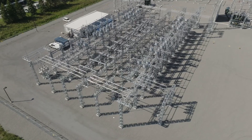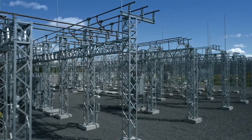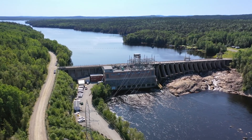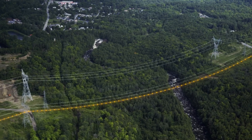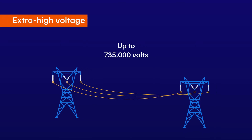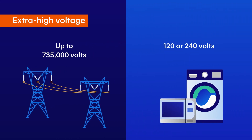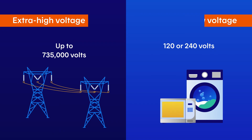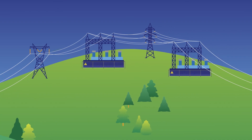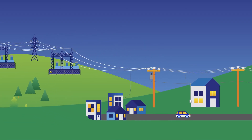The substation's main role is to raise or lower the voltage level of the electricity before it reaches our homes. It also directs the electricity by determining the route it will take to reach its destination, and it protects the grid. The voltage varies as electricity makes its way from the generating station to our neighborhoods. Over long distances, the voltage can reach up to 735,000 volts — that's extra high voltage. But at home, our appliances and devices operate at 120 or 240 volts, which is low voltage. On its journey, the electricity stops at several substations and changes voltage, adjusting as it moves from the generating station to our outlets.